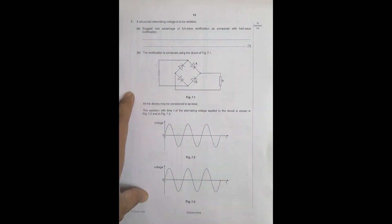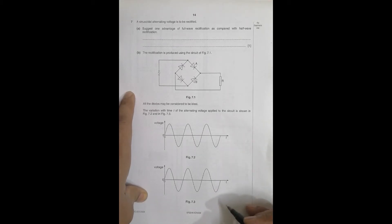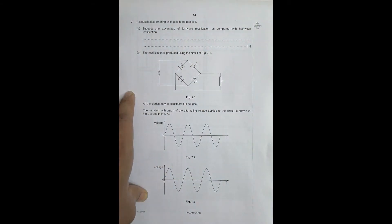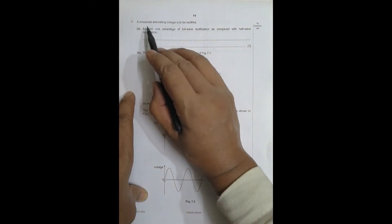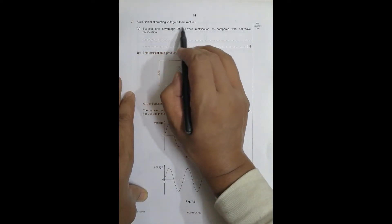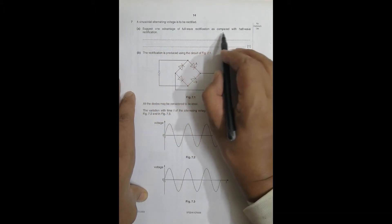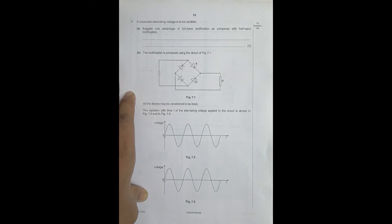Hello folks. I have an old question — it was asked by somebody who commented on another video. This is from the 2009 October/November paper, Paper 1, question number seven. The question concerns the chapter on AC (alternating current) and says: a sinusoidal alternating voltage is to be rectified. Suggest one advantage of full-wave rectification as compared with half-wave rectification.